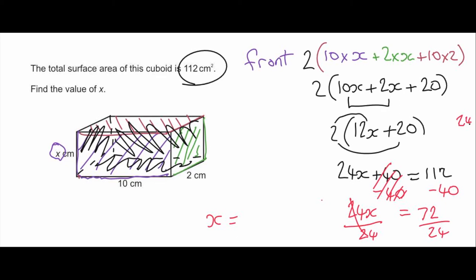And then how many 24s go into 72? We've got 24, 48, 72. So x will equal 3.